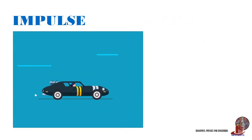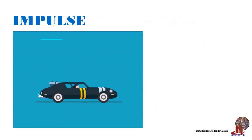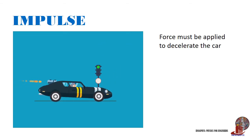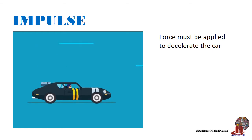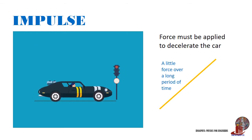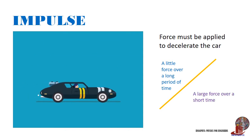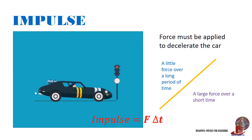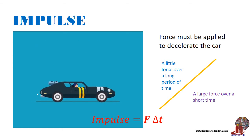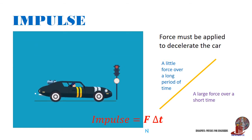Let's say there is a speeding car which needs to halt at a certain intersection. The driver would have to exert a force to slow down the car at the right spot. He can do this in two ways: apply a little force over a long period of time, or make a sudden stop by applying a large force over a short period of time. The relationship of force and change in time is what we call impulse, denoted as F times delta T, with units Newton-seconds for SI.